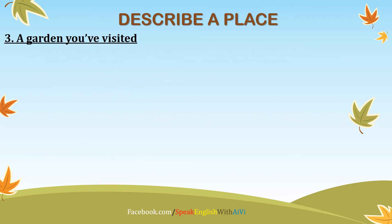To talk about a garden, you have to describe firstly what there is at the garden — the flowers, the trees, or maybe a pond with a school of fish and stuff like that. The next thing to cover in your description is the activities that you or anyone else can do at that garden.